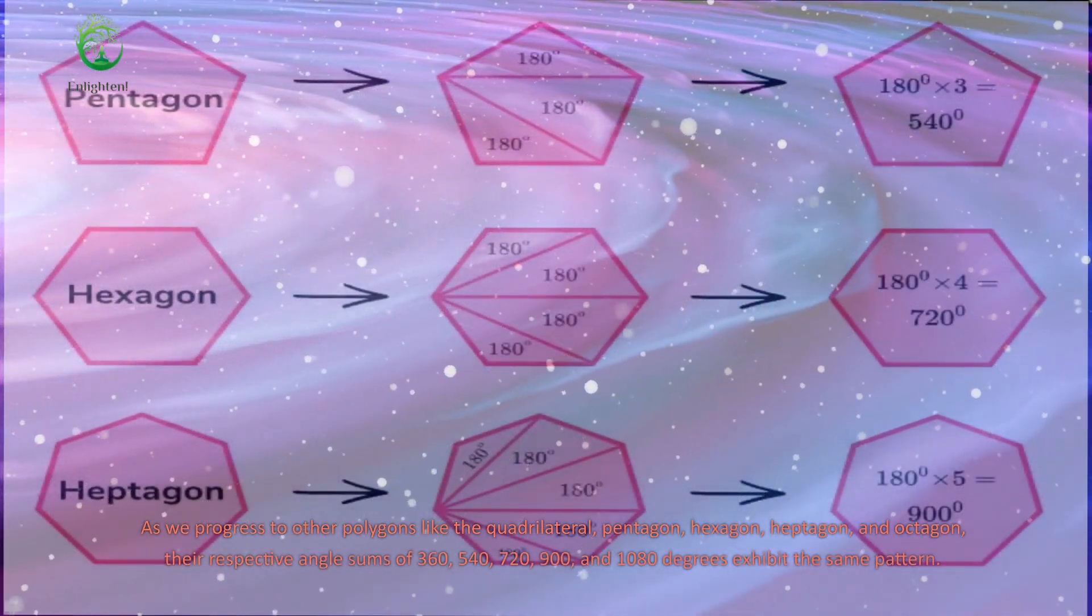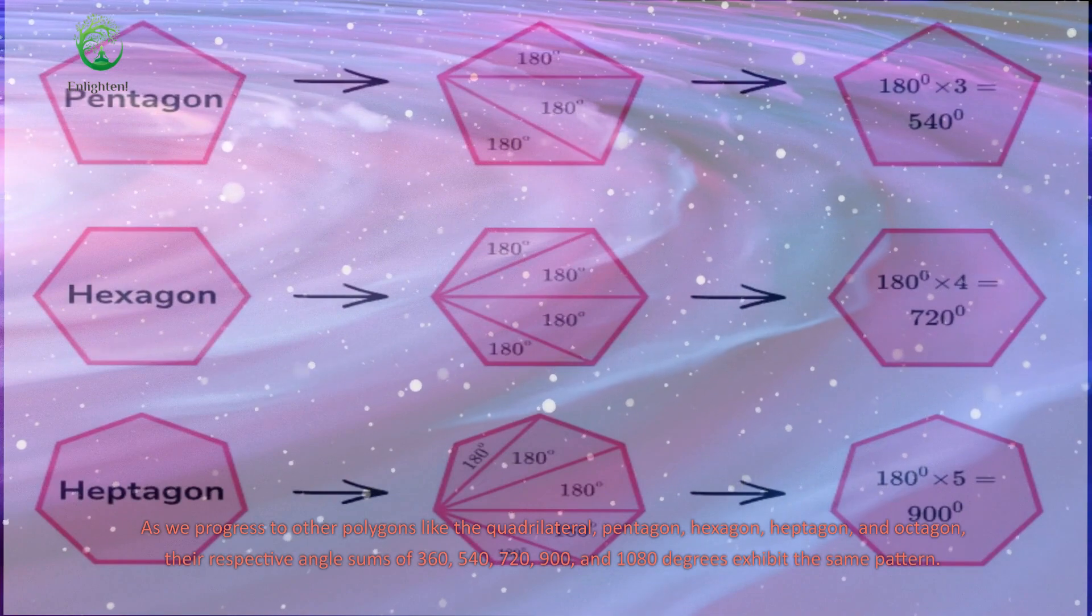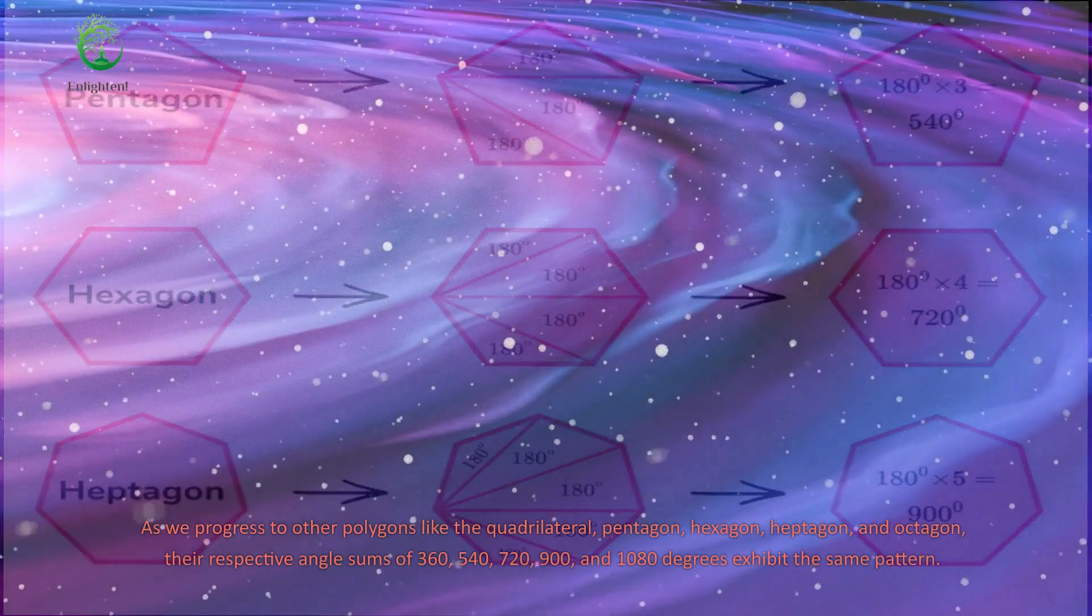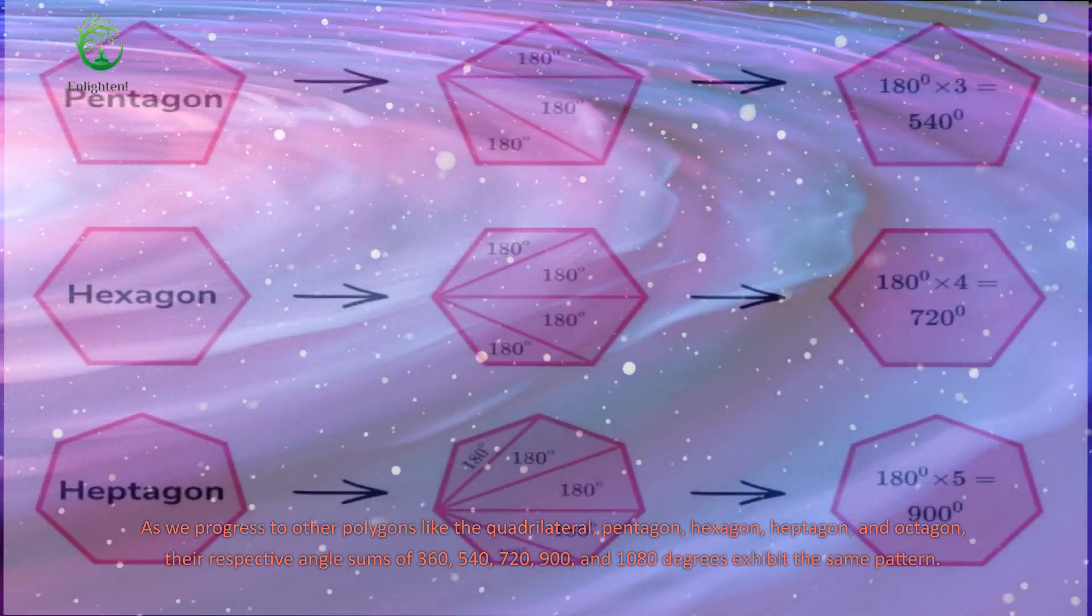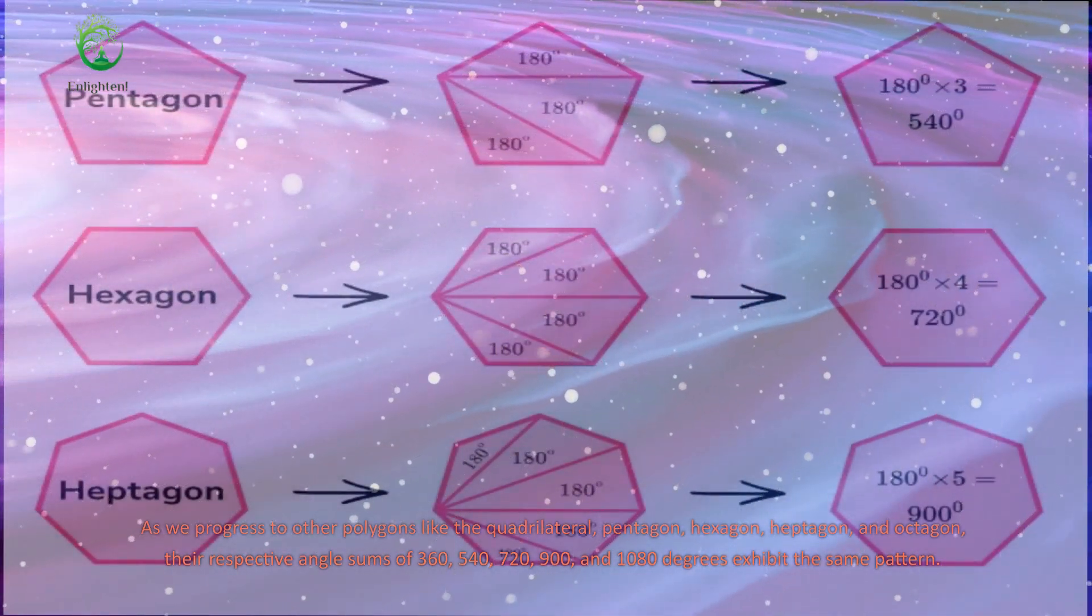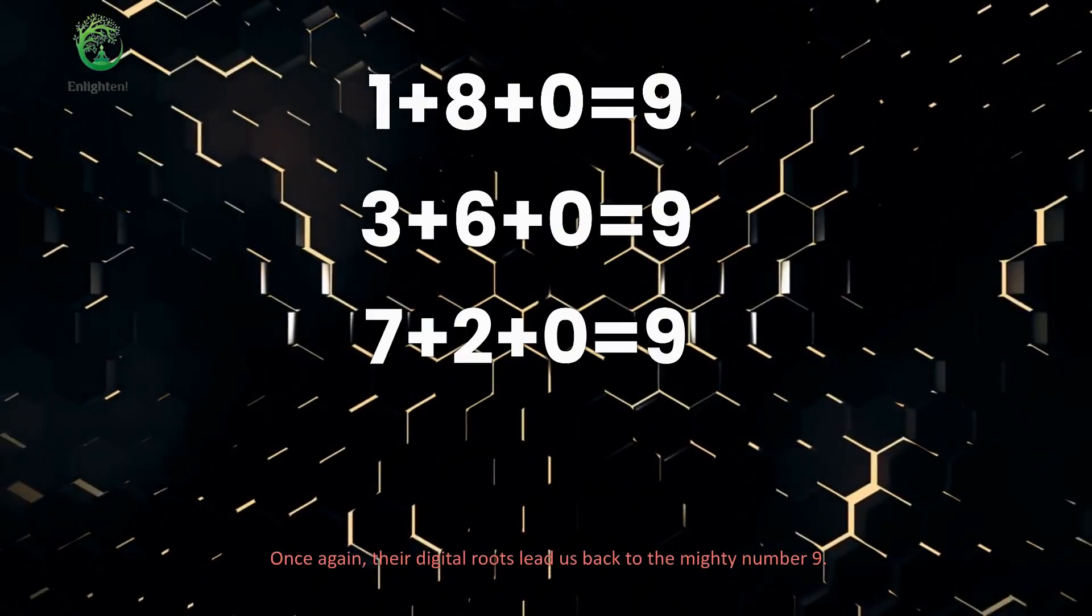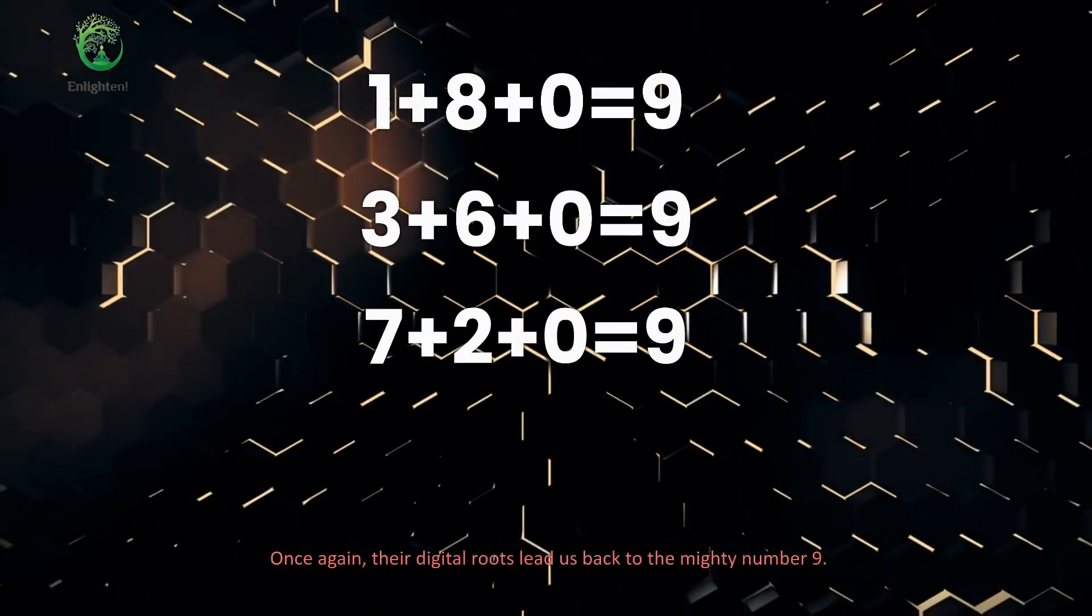As we progress to other polygons like the quadrilateral, pentagon, hexagon, heptagon, and octagon, their respective angle sums of 360, 540, 720, 900, and 1080 degrees exhibit the same pattern. Once again, their digital roots lead us back to the mighty number 9.